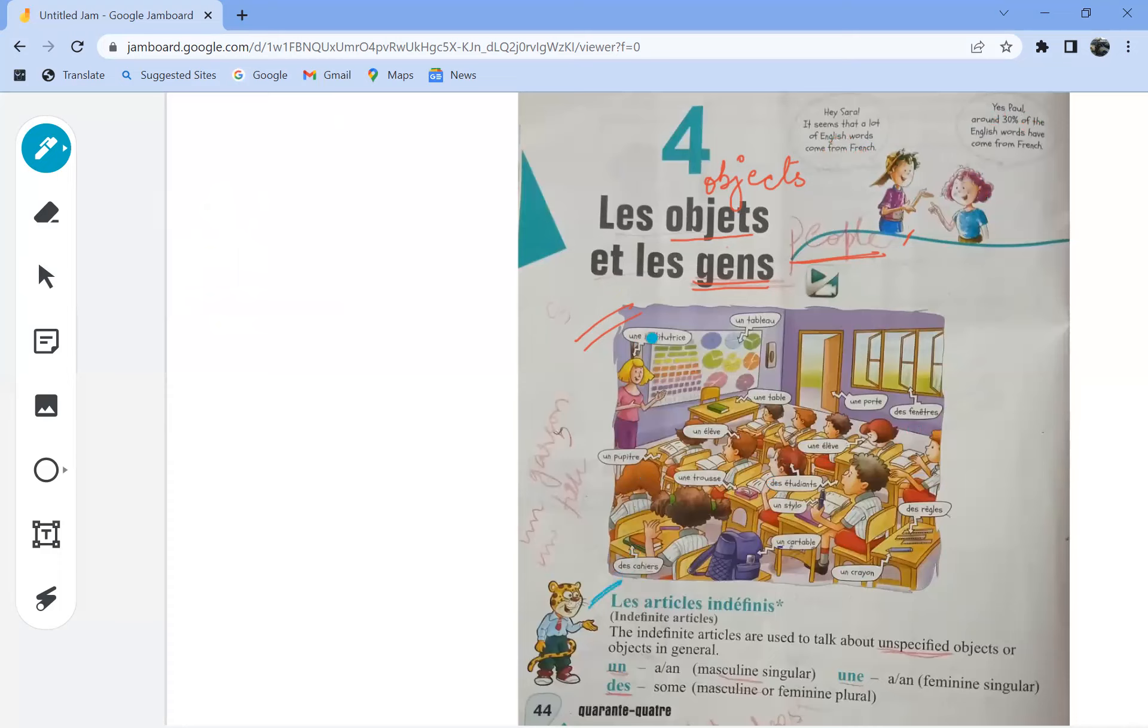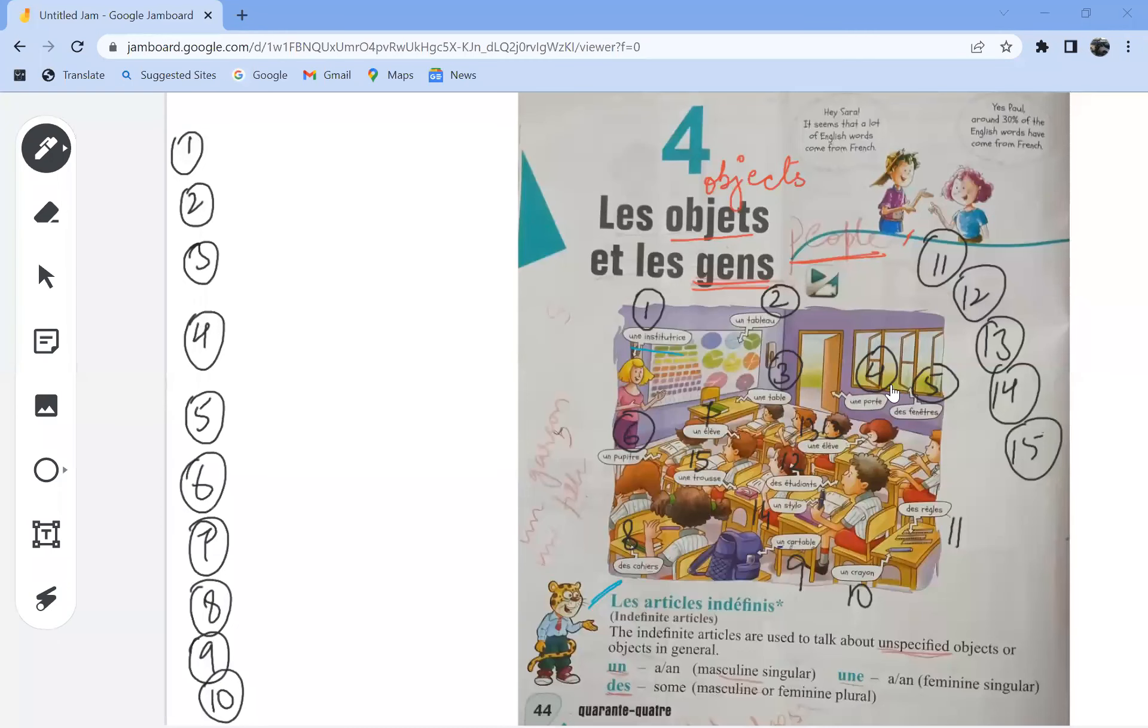So now let's read these words and understand their meaning in English. The first one is une institutrice. Une institutrice is the French word for a teacher. And if you remember from the previous video that was Qu'est-ce que c'est, you would remember une is the article we use for feminine nouns, so this is a female teacher.